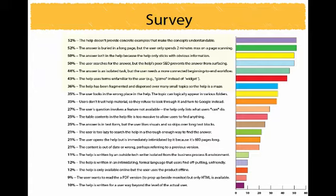The help is written in intimidating formal language — there's a movement toward emotional, vernacular, friendly speech, which is good, but it's not a main reason users aren't connecting. The content is out of date or wrong, perhaps referring to a previous version. The user opens help but is immediately intimidated because it's 600 pages long. The user is too lazy to search thoroughly. The answer is in text form but the user likes visuals and skips long text blocks. The table of contents is too massive to allow users to find anything.